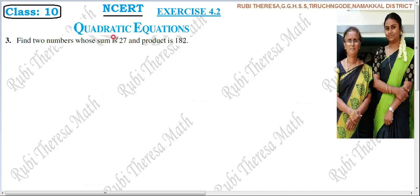Exercise 4.2 on quadratic equations, third sum. Find two numbers whose sum is 27 and product is 182.